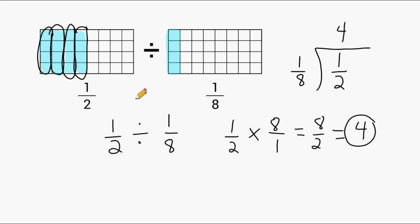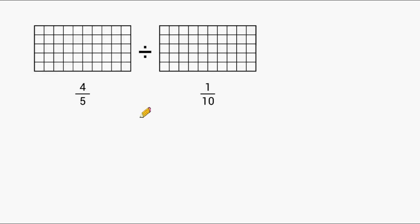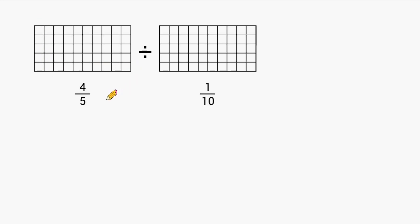Let's try another example. In this example, we have to take 4 fifths and divide that by 1 tenth. We have to start by shading 4 out of every 5 square units. If we look at this figure, we can see it is a 5 by 10 configuration, meaning we have a total of 50 square units covering this rectangle.